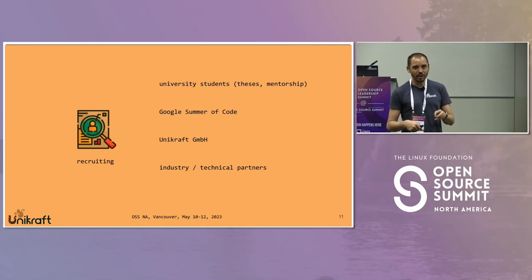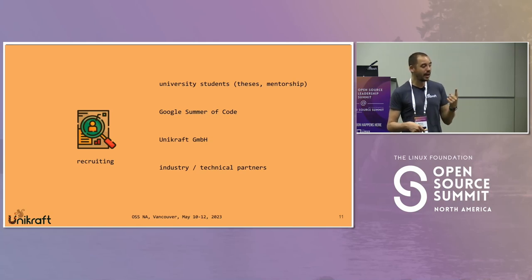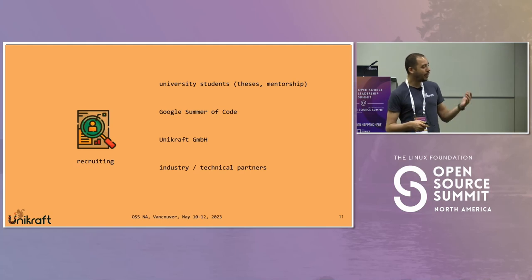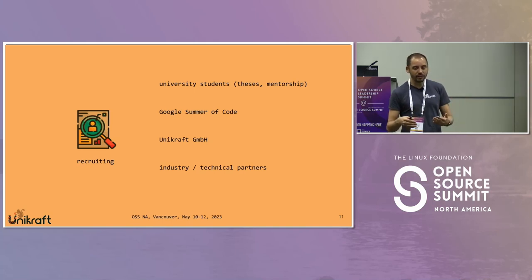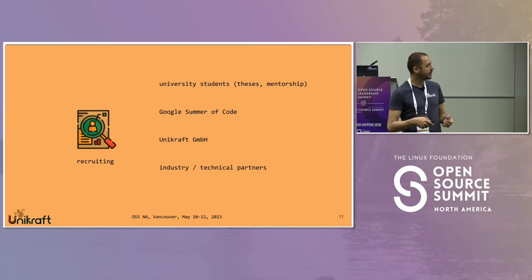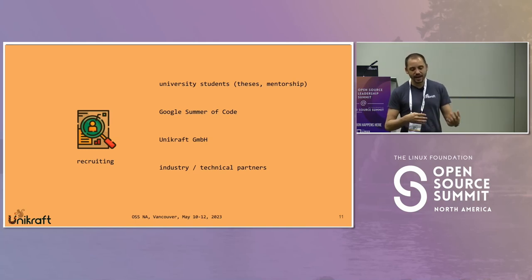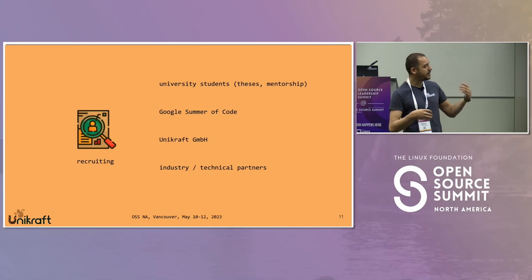The other thing is Google Summer of Code. This year is the second year we are part of GSoC. We now have five projects and five students. Last year we had three students, and two are actively involved — one of them, Maria, is now gaining a maintainership role. We are also aiming to do Linux Foundation outreach. Another way of recruiting is through the company, Unikraft GmbH, getting experienced people who work on both the commercial and open source side, and through industry partners including companies interested in Xen support.